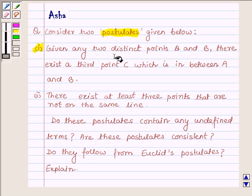First, given any two distinct points A and B, there exist a third point C which is in between A and B.